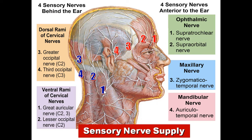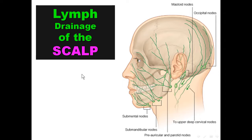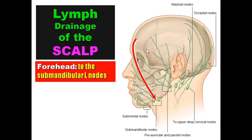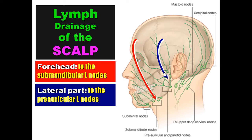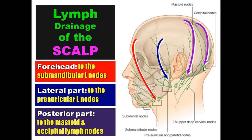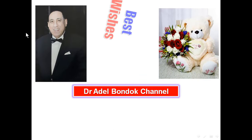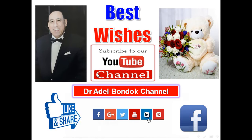Regarding the lymph drainage of the scalp: the forehead drains into the submandibular lymph nodes; the lateral part of the scalp (temporal region) drains into the parotid or preauricular lymph nodes; the posterior part of the scalp drains into the mastoid (retroauricular) lymph nodes and the occipital lymph nodes. Thank you very much — best wishes and good luck. Please subscribe to my channel, like, share, and leave a comment.